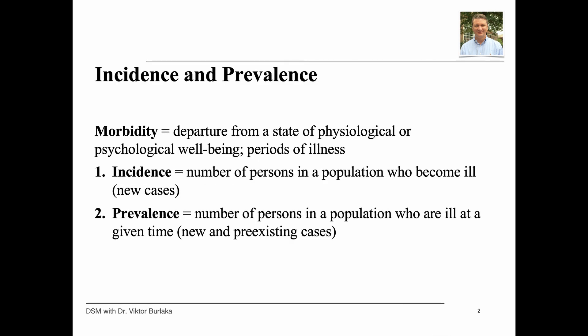Let's talk about terminology. Any departure from a state of physiological or psychological well-being is defined as morbidity. In other words, morbidity means disease, injury, and disability. It can also describe periods of illness or their duration. One measure of morbidity is incidence, which refers to the number of persons in a population who become ill — for example, the risk to develop suicidal behaviors among children who were spanked by their parents — focusing only on new cases during a given time period. Another measure is prevalence, which refers to the number of people already ill at a given time, including both new and pre-existing cases.